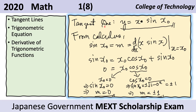Here we rewrite our tangent line, replacing m with the value we found in terms of the point of intersection x sub o. From calculus, we know that the slope of the curve at the point of intersection x sub o, y sub o is the derivative of the curve with respect to x evaluated at x equals x sub o. The derivative of y equals x sine x is sine x plus x cosine x, and if we replace the x's with x sub o, we get that equation.